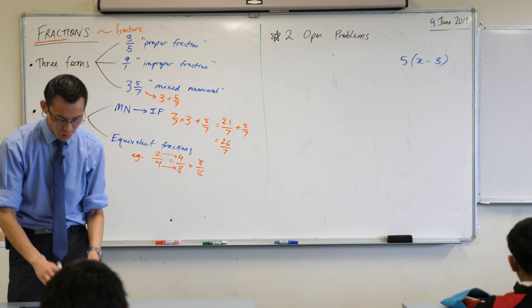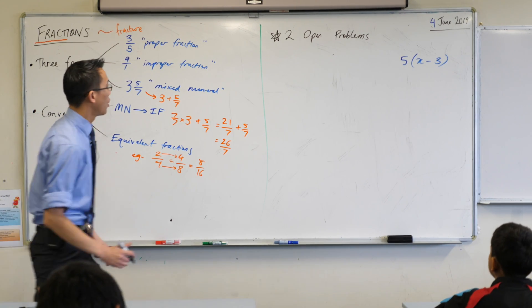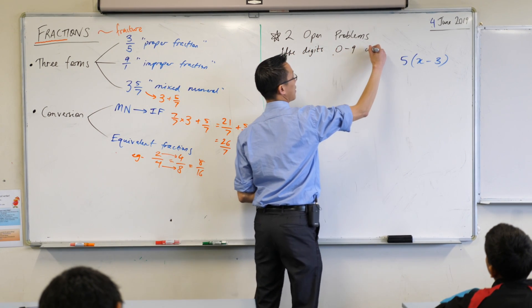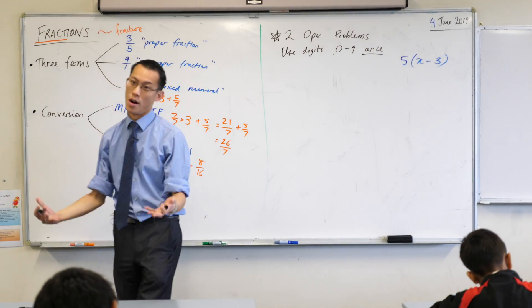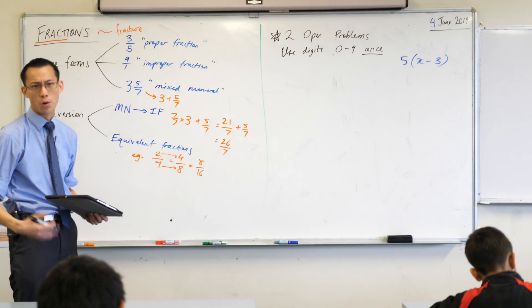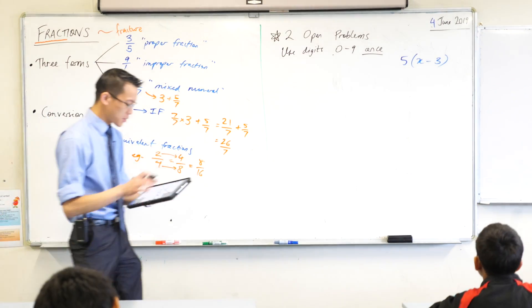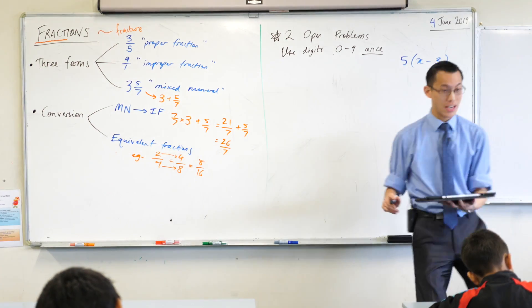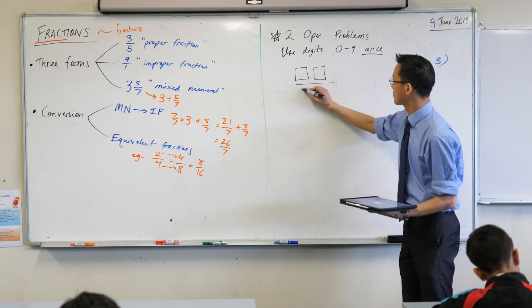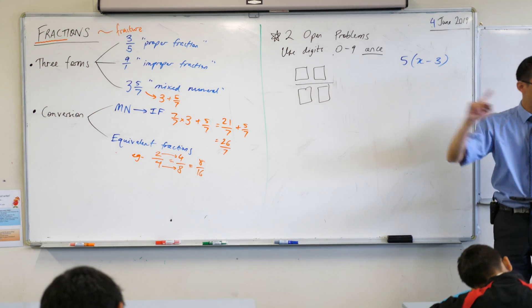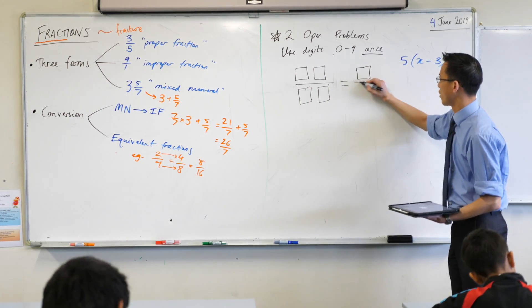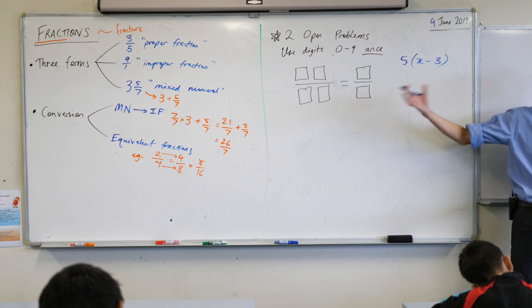So here are my two open problems. In each case, you can use the digits 0 to 9 at most once. You don't have to use all of them, as you'll see in a second, but you can't use three more than once, or you can't use five more than once, or something like that. So here are the two challenges. I'd like you to use these digits to fill in this statement here.